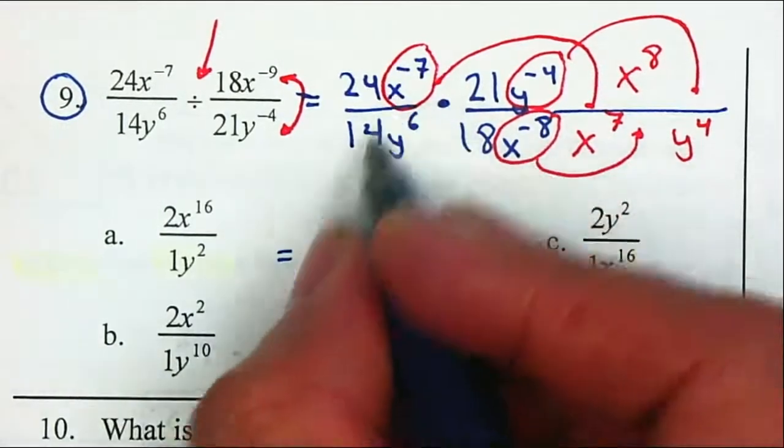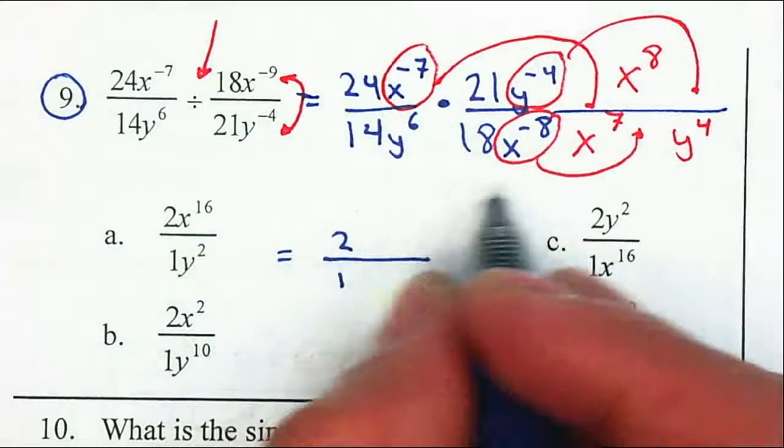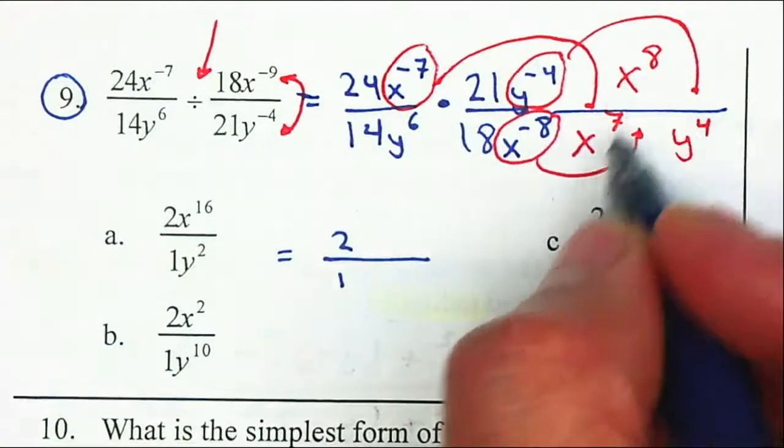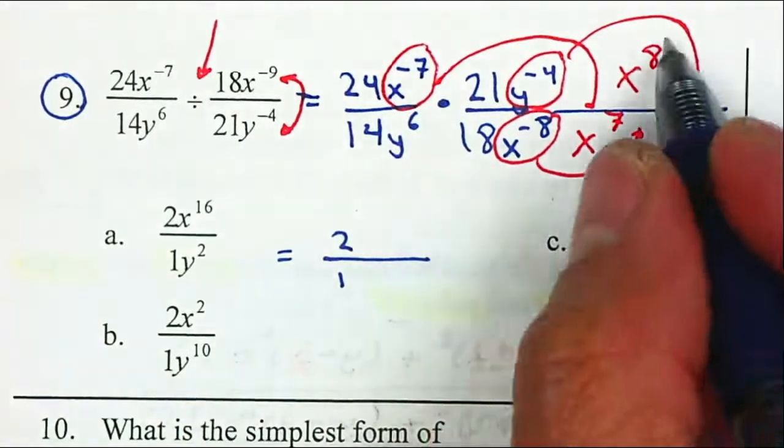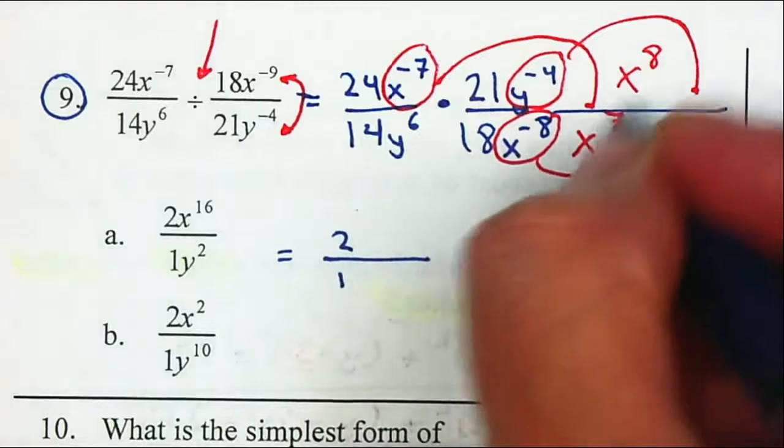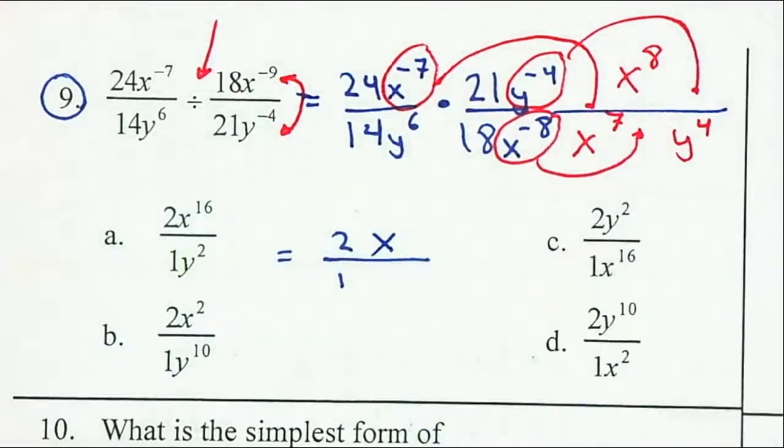So let's see. Let's deal with the x's first. I have 8 and 7. So we're going to subtract 8 minus 7, which gives me 1. 7 cancels and there's 1 left over on the numerator.